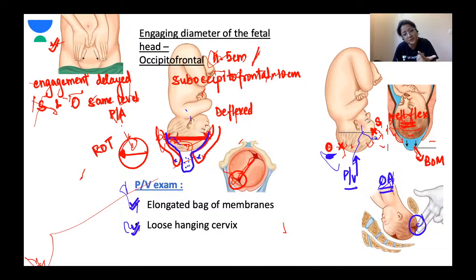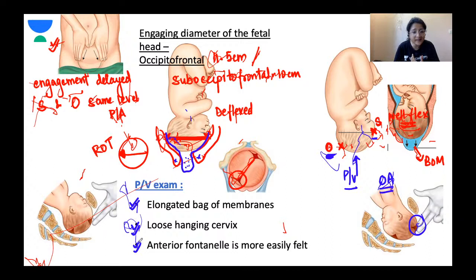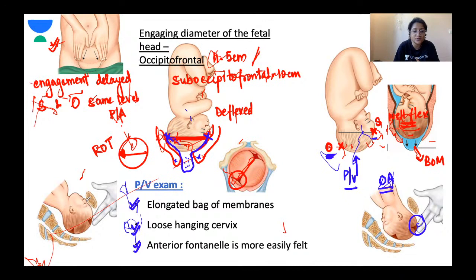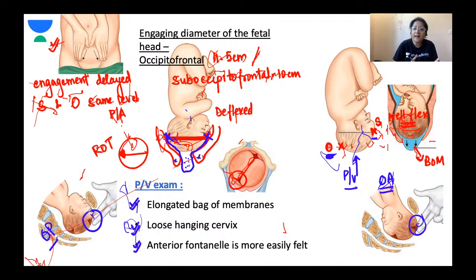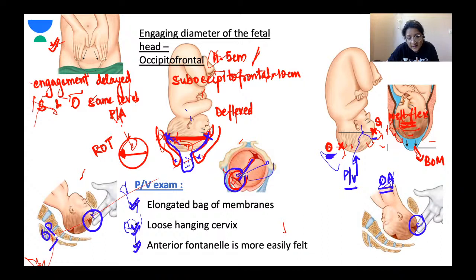Now let's talk about unfavourable outcomes. Sometimes labour can get arrested along any of the pathways. With persistent deflection of the head — perhaps due to inadequate contractions, CPD, or a faulty shape of the pelvis — the head does not flex properly. Any of these factors singly or in combination can lead to unfavourable outcome. The android pelvis, a very common cause of ROP, has less space anteriorly, which contributes significantly.